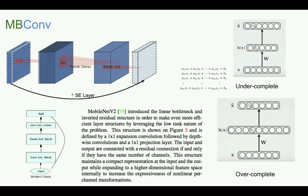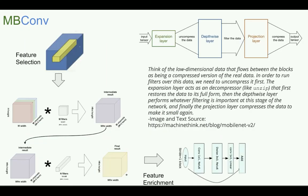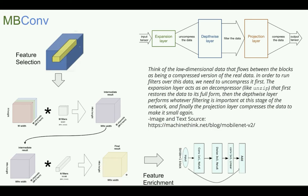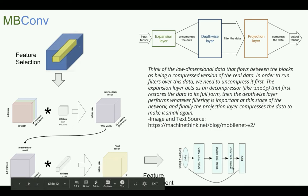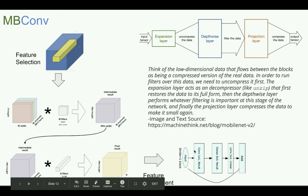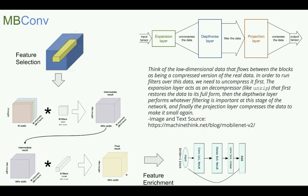MBConvs create features in a three-step process. First, they use 1×1 convolutions to project the input feature map into a higher-dimensional space. Then they use 3×3 depthwise separable convolutions to do feature creation in this higher-dimensional space. Finally, they use residual addition to enrich the input feature map. So there are three stages: feature selection, feature creation, and feature enrichment. I have a video on MobileNet-V2 and EfficientNet covering MBConv blocks in detail if you'd like to learn more.